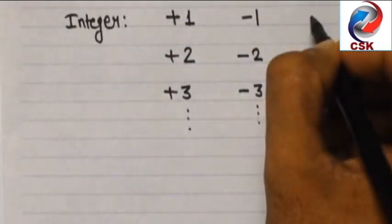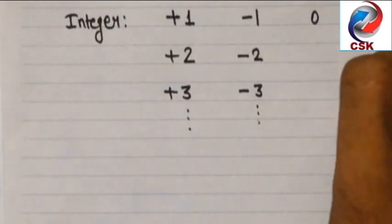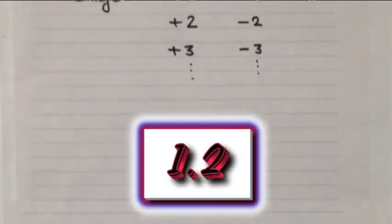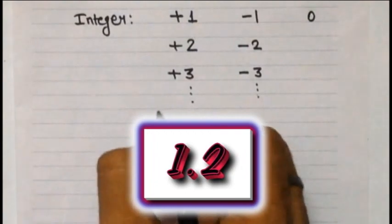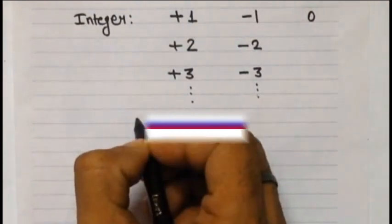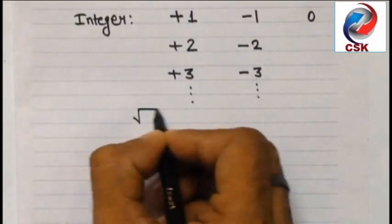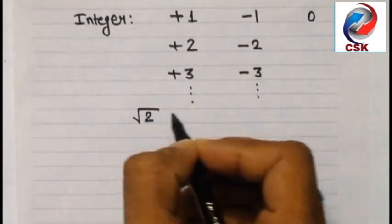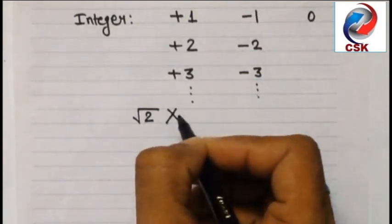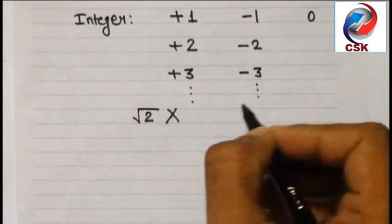Another example: 0. This is also a complete number. But consider 1.2 - this is not a complete number, so this cannot be an integer. Let's check another example: √2. We know that √2 is 1.414. This contains a decimal after which some numbers are there, so this is not a complete number.